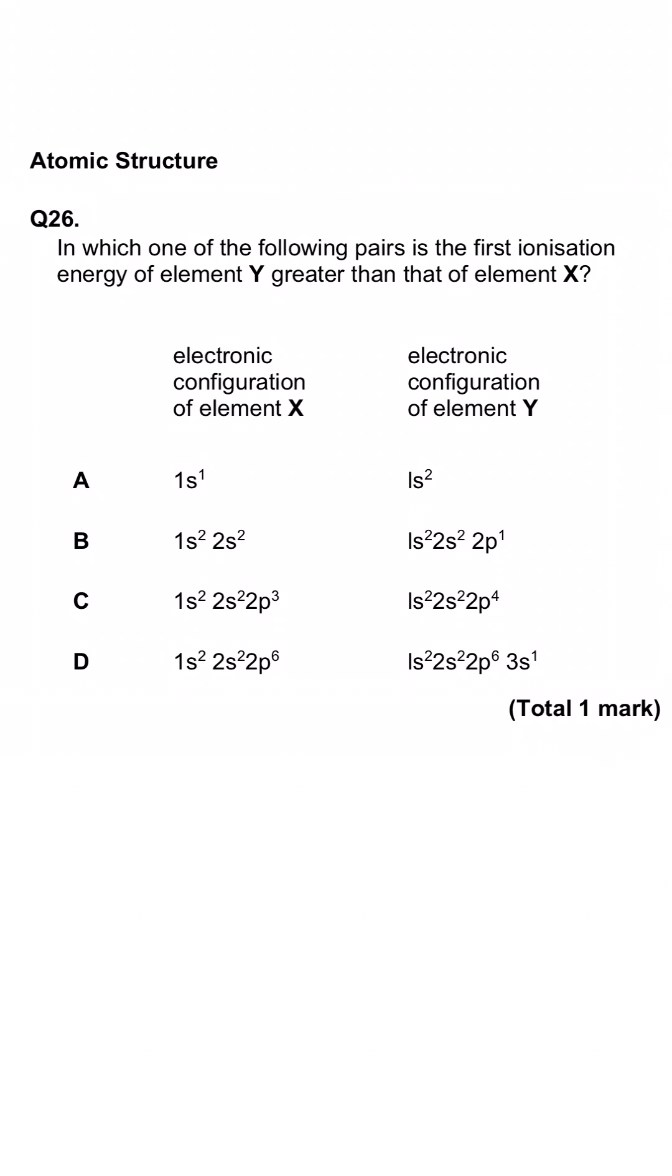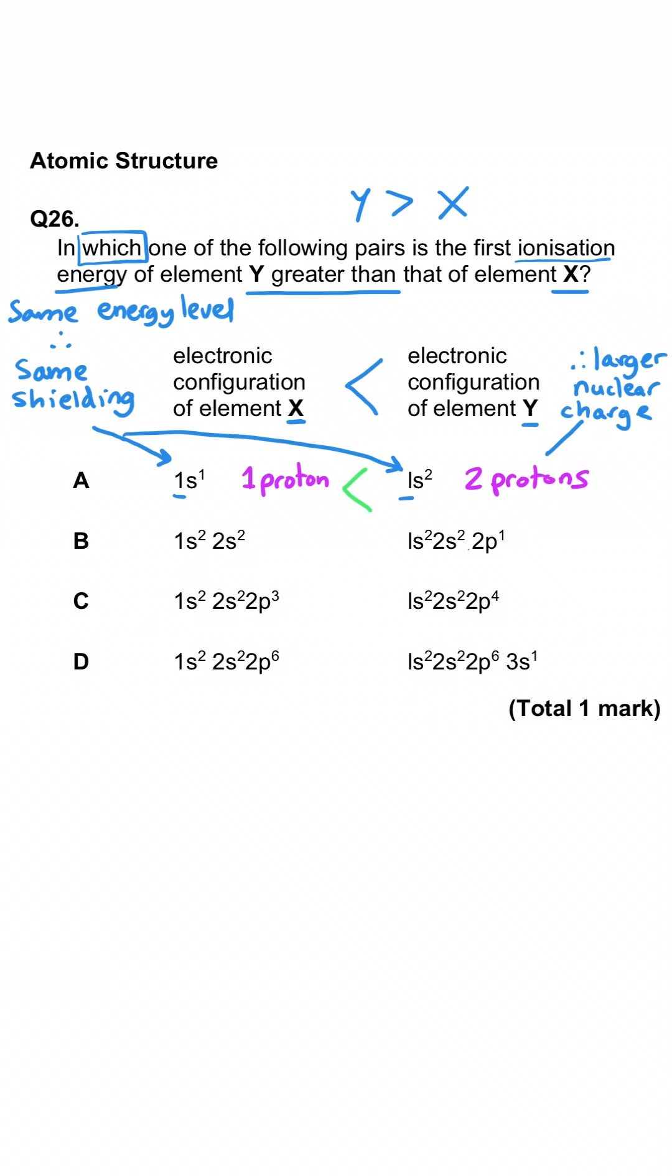In this question we're asked which of these pairs of ionization energies are greater for Y than they are for X. So in A we've got 1s1 and we have to assume that all of these are for atoms not ions. If it's 1s1 that means it will have only one proton whereas Y in 1s2 will have two protons which means it will be harder to remove that outer electron from Y because there are two protons pulling the electrons and the electrons are in the same energy level and so have the same shielding. So A is the correct answer.